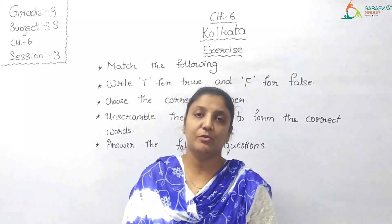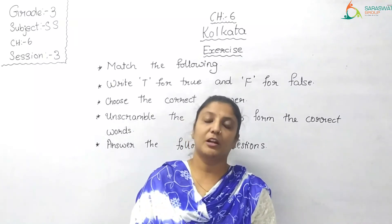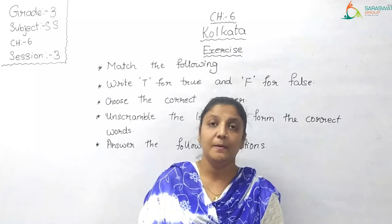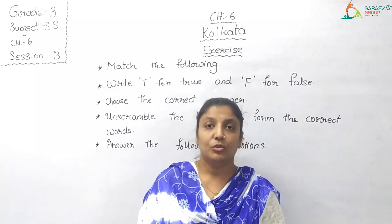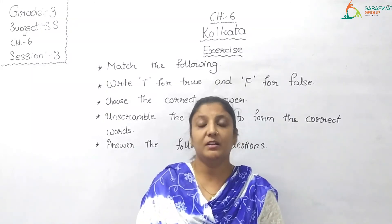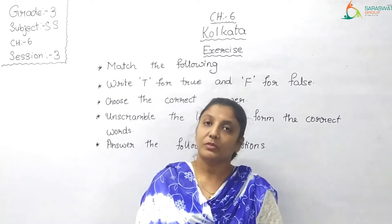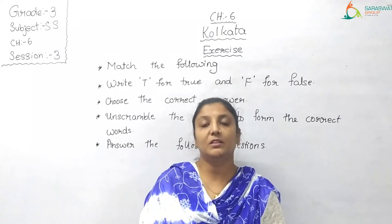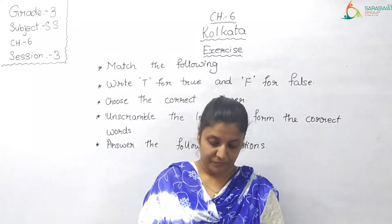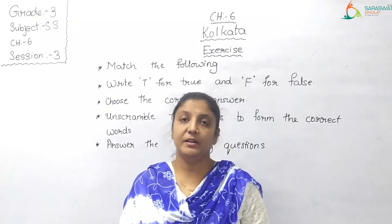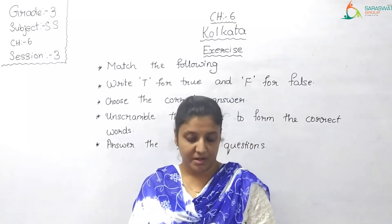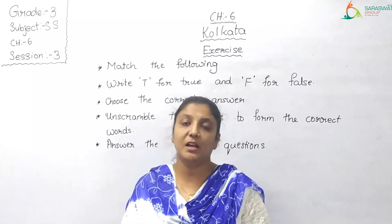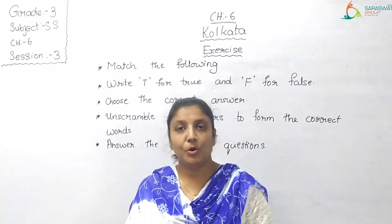Now let's move on to: unscramble the letters to form the correct words. Here, statements are given and the answers are in brackets with jumbled alphabets — you need to identify the correct word and its spelling. A: A tourist attraction in Kolkata. Answer: Eden Gardens. B: The season when Kolkata receives heavy rainfall. Answer: Monsoon.